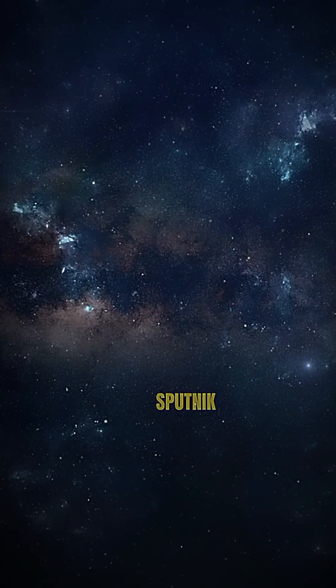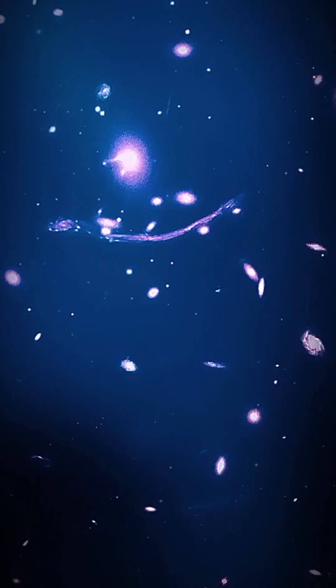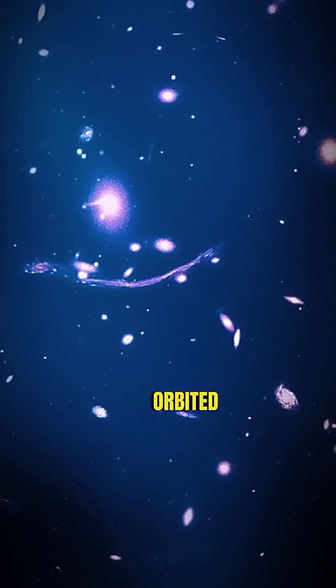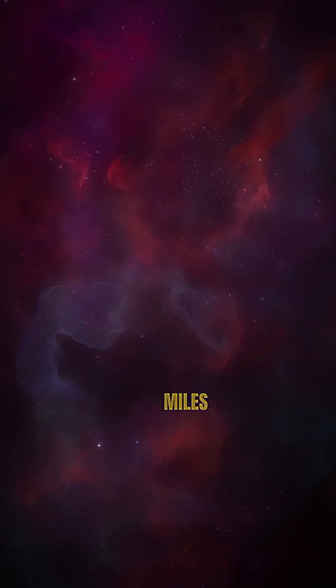Fact number one, Sputnik 1 was only about the size of a beach ball, measuring just 23 inches in diameter. Fact number two, it orbited the Earth every 96 minutes, traveling at a speed of about 18,000 miles per hour.